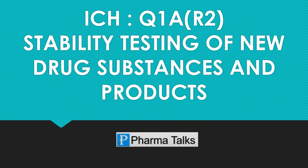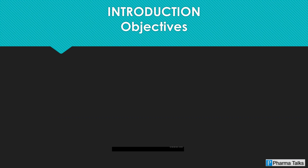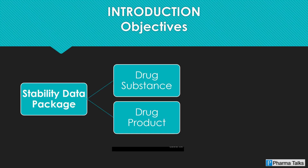ICH Guideline Q1A: Stability Testing of New Drug Substances and Products. Objectives of the Guideline: The following guideline is a revised version of the ICH Q1A guideline and defines the stability data package for a new drug substance or drug product that is sufficient for a registration application within the three regions of the EC.